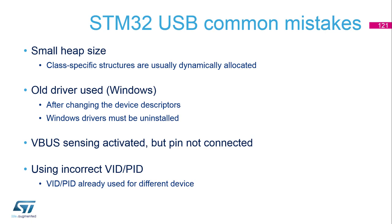Here is a highlight of commonly observed problems from our support. The first on the list is small heap size. As seen during the hands-on sessions, the USB middleware in STM32 libraries uses dynamic memory allocation, so USB structures and buffers are stored in the heap. For some classes, the default CubeMX value of 0x200 is not enough, which causes a failure during connection. Some users also modify the library to use static allocation instead of dynamic for their end application.